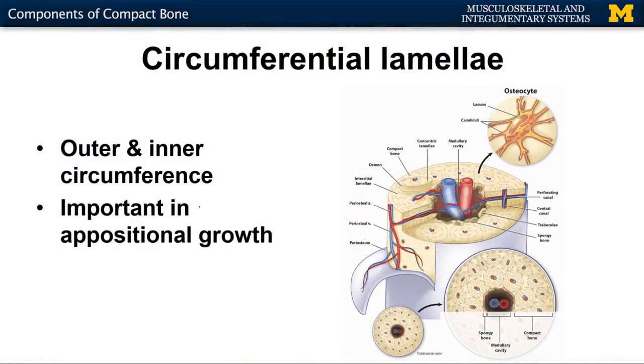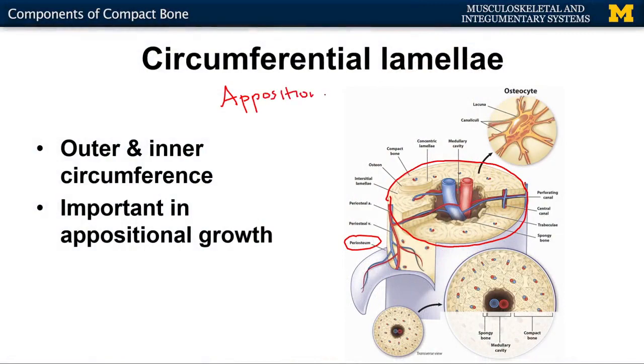Lastly, the circumferential lamellae are located along the outer edges of the bone. These are almost like super-wide concentric lamellae spanning the entirety of the bone. The periosteum, or outer connective tissue layer, is closely adhered to the circumferential lamellae — in fact, components of that connective tissue actually move into the bony matrix here. Circumferential lamellae are important for appositional growth, which means growth in bone width, not length. You'll have osteogenic cells and osteoblasts in this area for the formation of new osteons during widthwise growth.